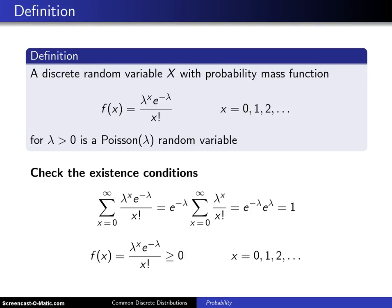The derivation on the previous slide leads to the following definition. A discrete random variable X with probability mass function f of x equals lambda to the x e to the minus lambda over x factorial for x equals 0, 1, 2, etc.